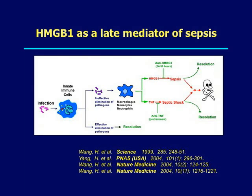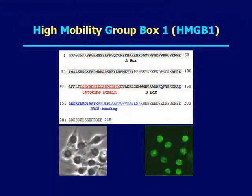We have generated enough data suggesting that HMGB1 is a very important late mediator of experimental sepsis, because antibodies against this protein could very effectively rescue mice from lethal experimental sepsis.